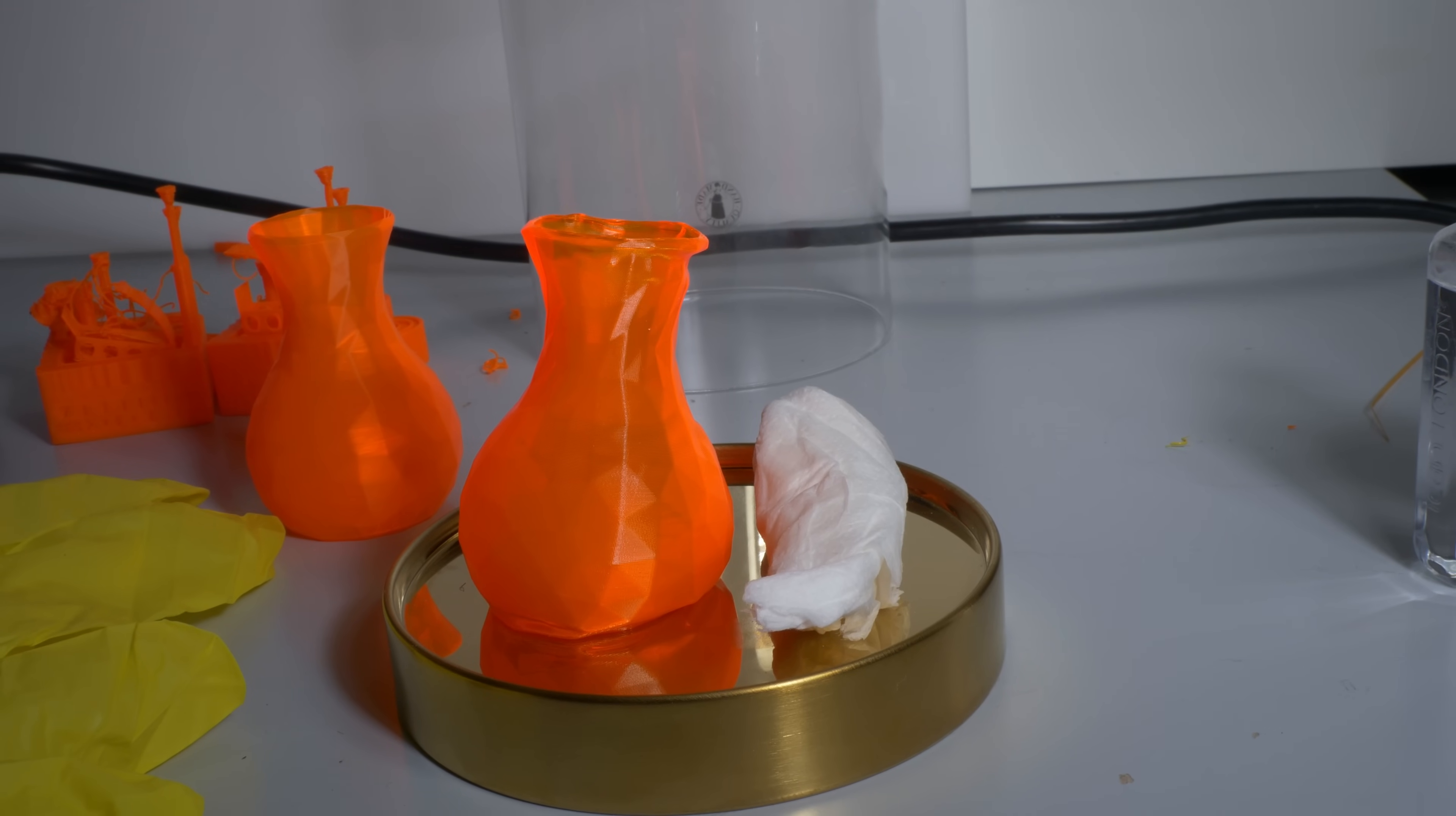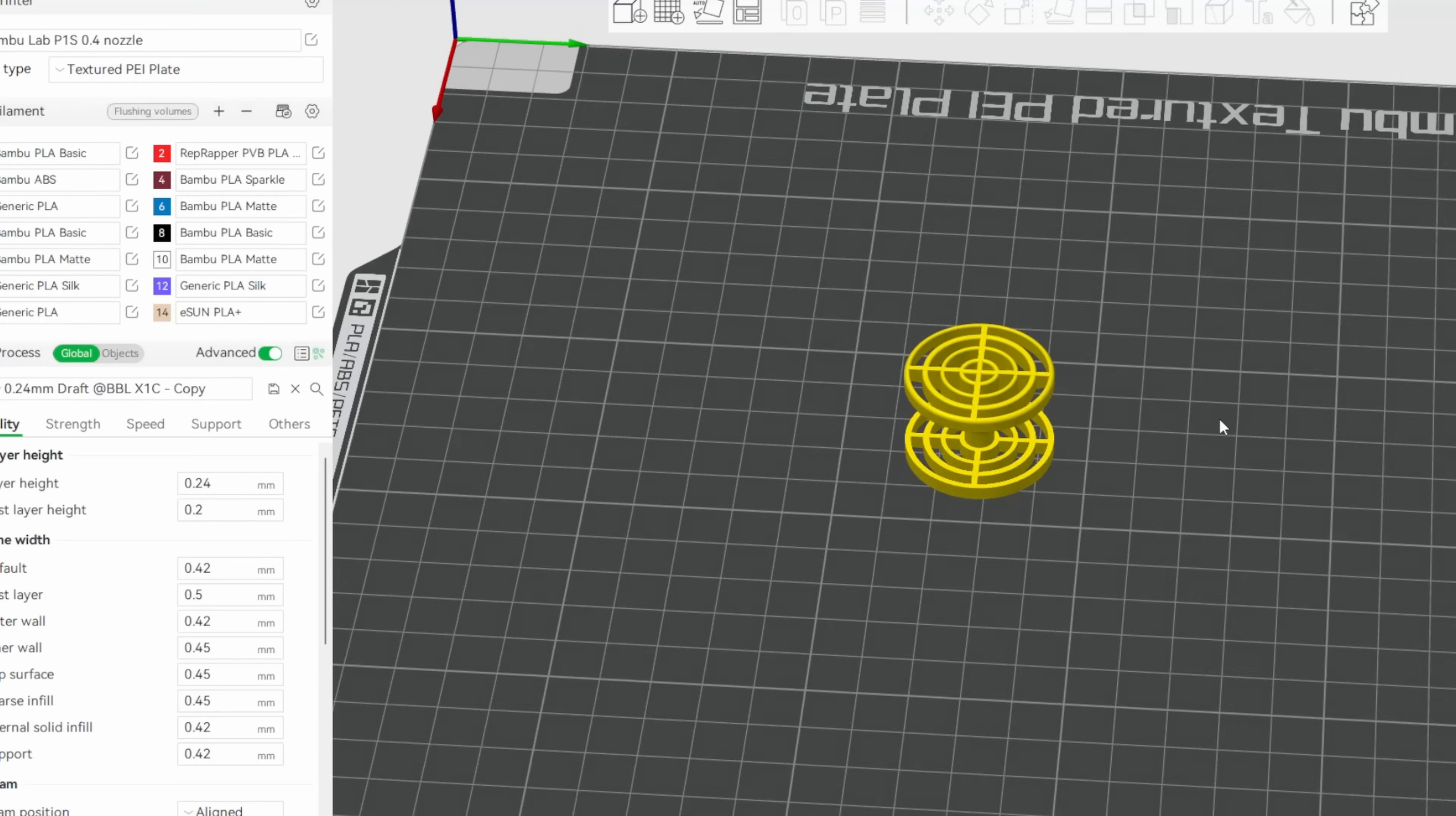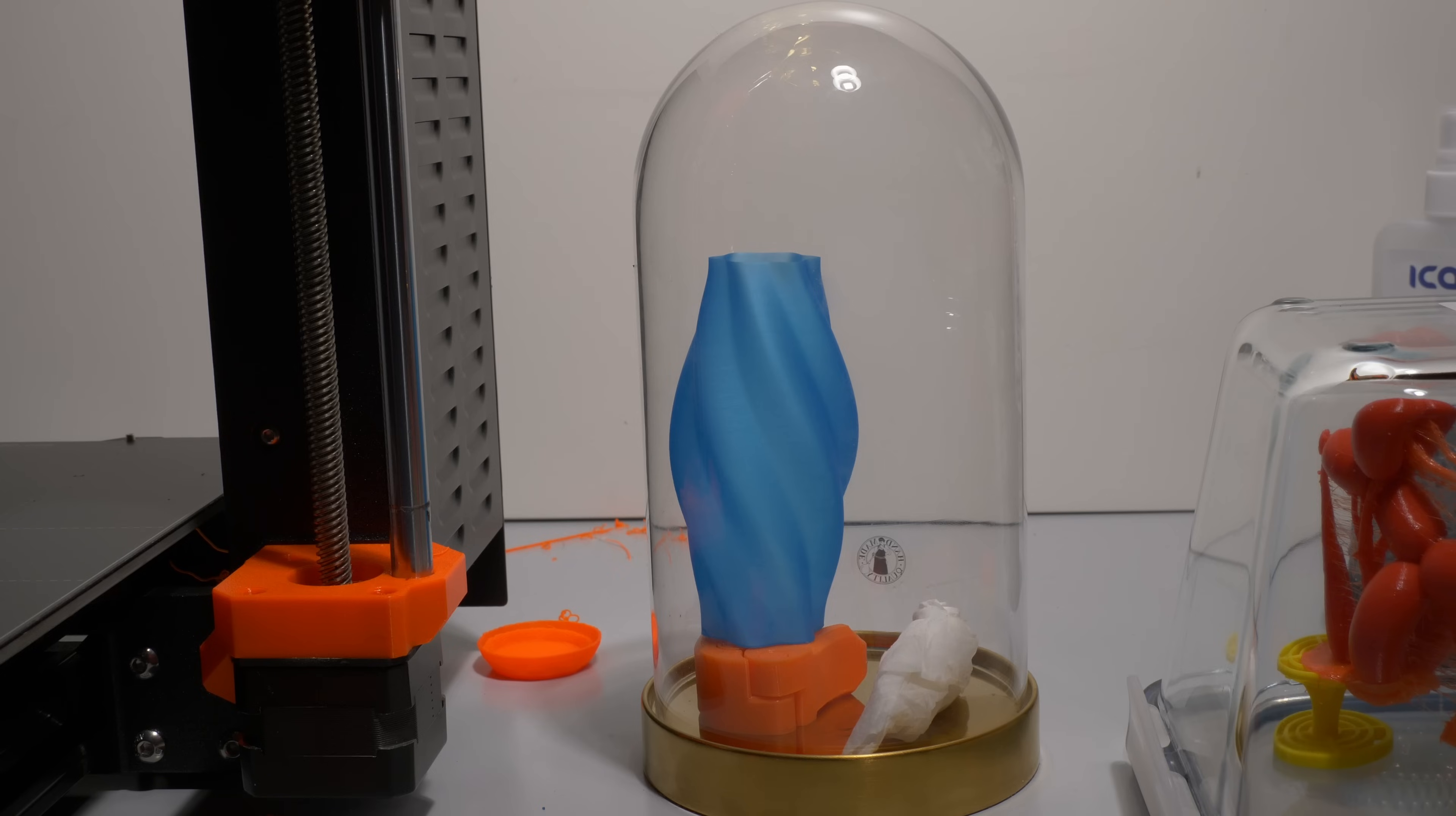The vapors either hang out low in the container or condense on the cold base somehow. This causes whatever's touching the base to soften and collapse. So you probably don't want that. To prevent it, you need to raise it up a bit. I created these stands printed out of PLA.